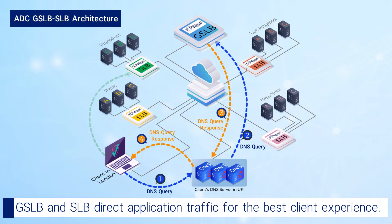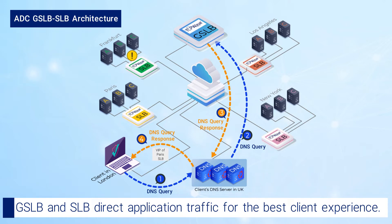Note that the GSLB continuously monitors the health of all the SLBs and application servers. So, for example, if the Frankfurt SLB was overloaded or unavailable, then in step 4, the GSLB would have sent the client the virtual IP address of the next best SLB, such as the one in Paris. This behavior ensures continuous application availability.